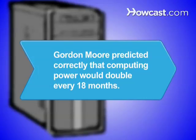Did you know Gordon Moore predicted correctly in 1965 that the computing power of integrated circuits would double approximately every 18 months?